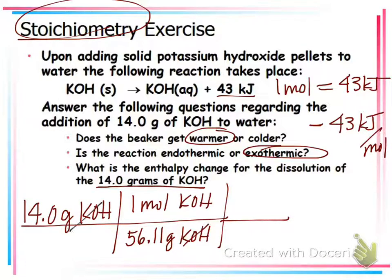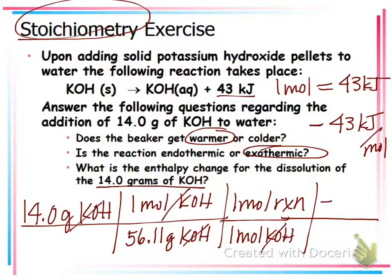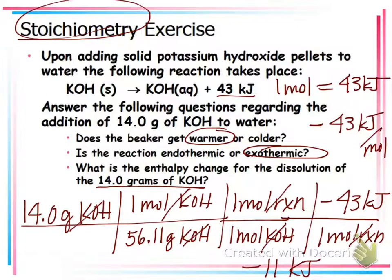So, I've got it in moles. So, now I can see from every one mole of KOH and one mole of, this is reaction, Rxn. It stands for reaction. I don't want to spell it out. So, it's a negative 43 kilojoules per mole for the reaction. So, now I just do my normal stoichiometry, multiply the top, divide by the bottom, and I get that they would be negative 11 kilojoules.